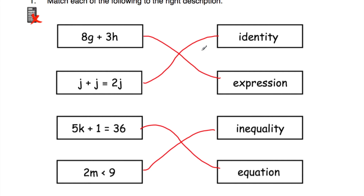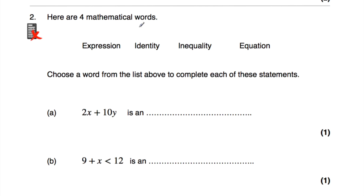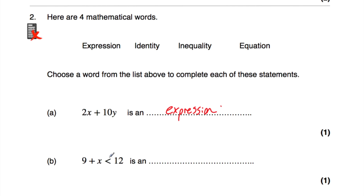So we've matched each of the following to the right description. Question number 2: we've got four mathematical words — expression, identity, inequality, and equation — and we've got to choose a word to complete each statement. 2x plus 10y doesn't have an equal sign, inequality sign, or equivalent sign, so that's an expression. Next, 9 plus x is less than 12 — we've got the less than symbol, so that's an inequality.